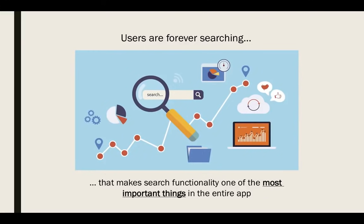The main reason is user software searching — starting from the simplest landing page and ending with complicated CRM systems. Users want to search because nobody wants to waste their time searching for content manually. That's why we have Google. Search functionality is one of the most important things in an entire application. If your search is not responsive enough, a user will simply go to another system where search is fast.